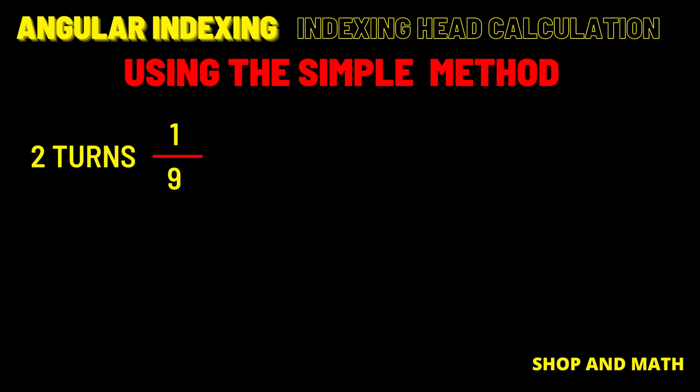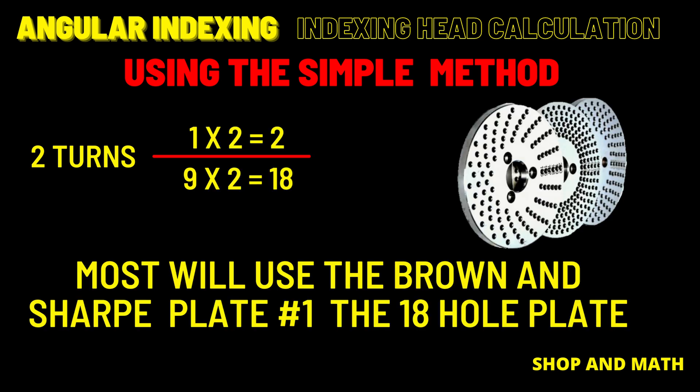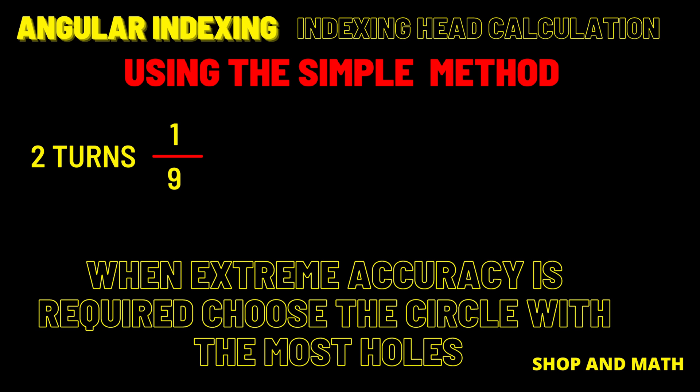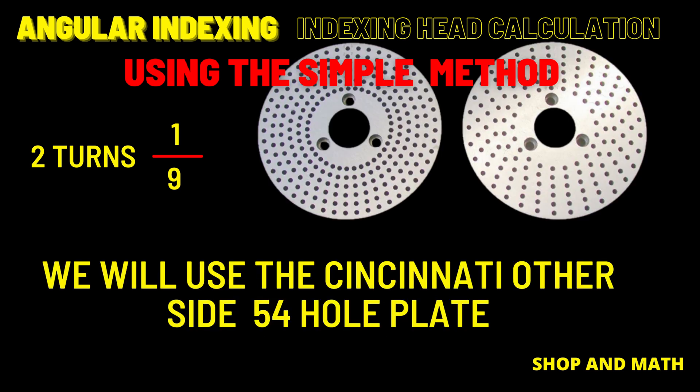So as we look for an indexing plate, the one we come across first would probably be the brown and sharp plate number 1 with 18 holes. Most people will choose this one because it's fast and easy. It will be two turns and two holes in an 18 hole plate. Because this is an apprenticeship training video, we have to choose the largest bolt hole circle. And that means we're going to choose the Cincinnati other plate which has 54 holes in it.